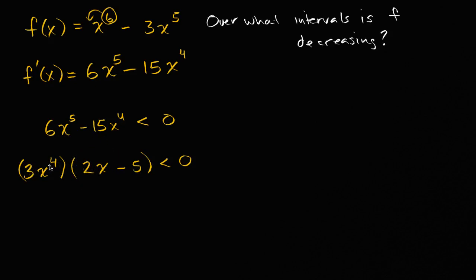So if I'm doing the product of two things and I want it to be less than zero, there are two ways for that to happen: either the first thing is positive and the second is negative, or the first is negative and the second is positive.